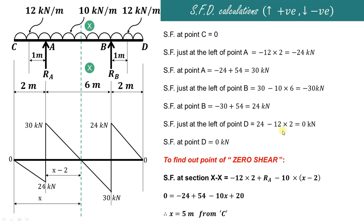There is a point of zero shear where the shear force diagram changes sign. For section X-X at distance x from C, shear force equals zero: −(12×2) + RA − 10(x−2) = 0, giving −24 + 54 − 10x + 20 = 0, so x = 5 meters from C. At x = 5 m, the shear force is zero and the bending moment is maximum.